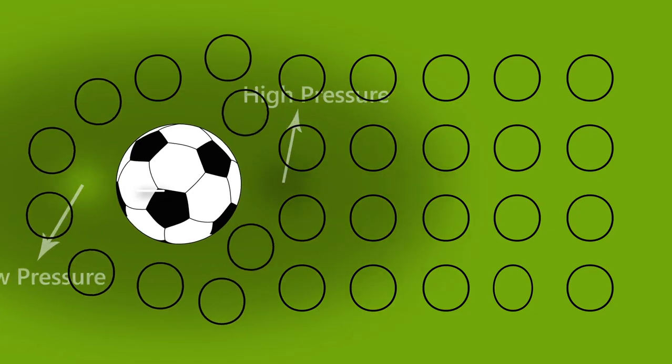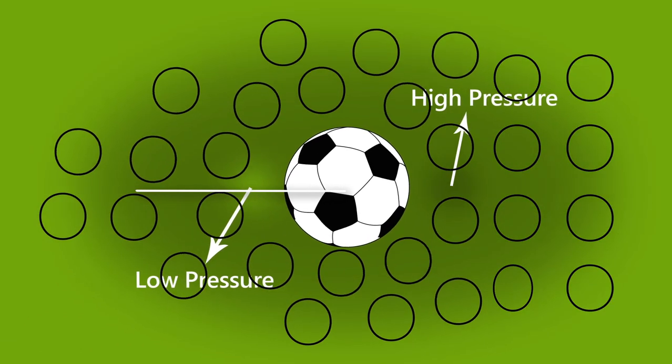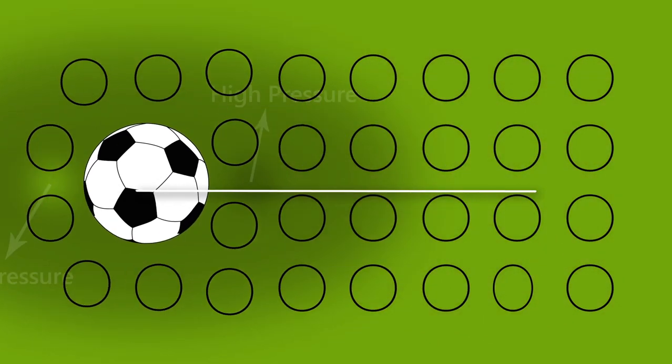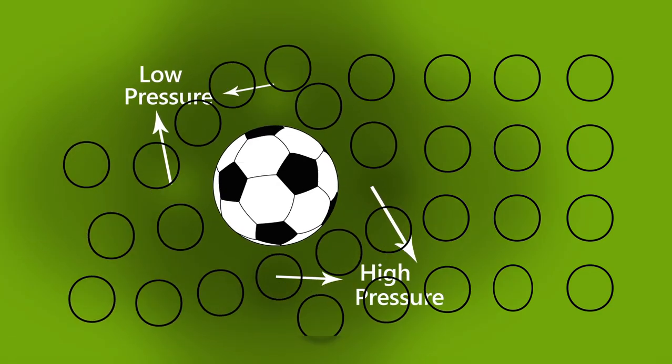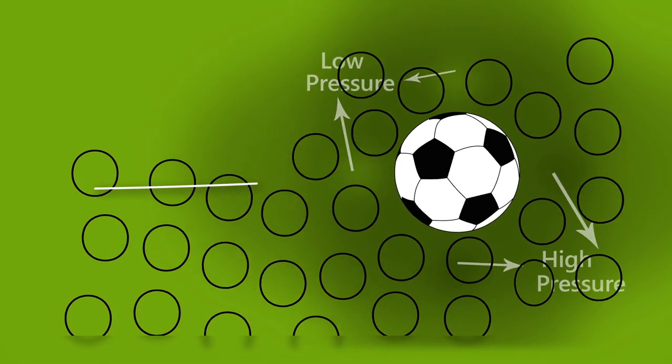When a ball is moved in air without rotation, then it moves along a straight line. But when rotation is provided to the ball, the ball bends to one side. That is, its trajectory does not remain a straight line.